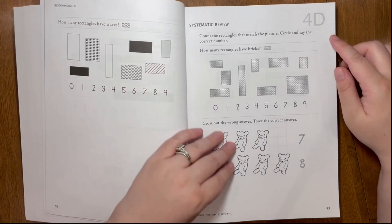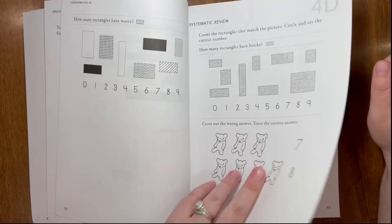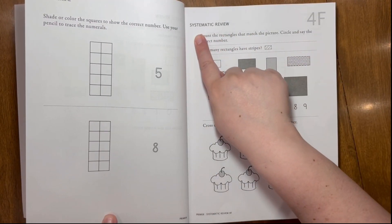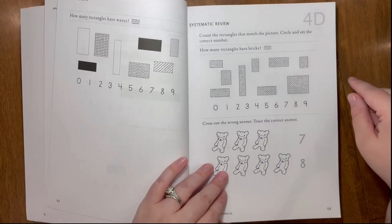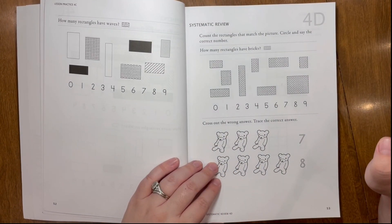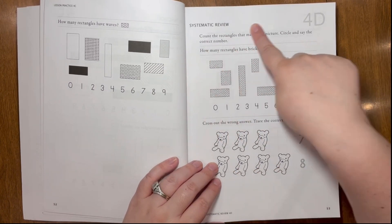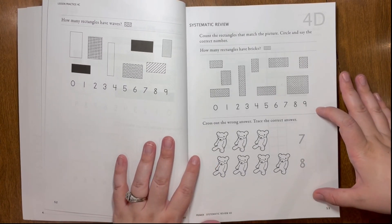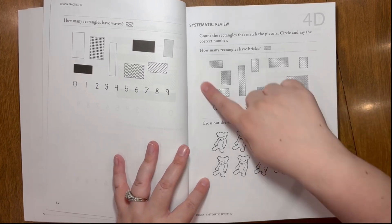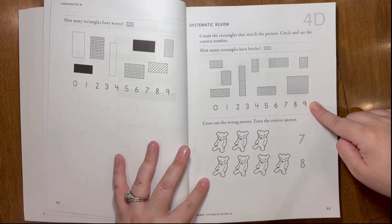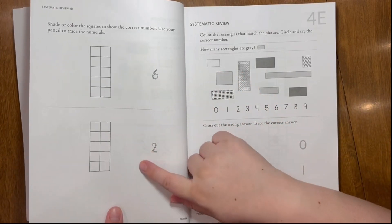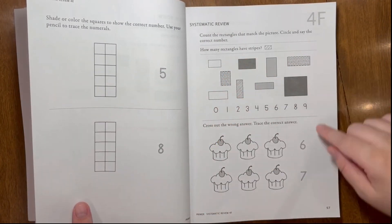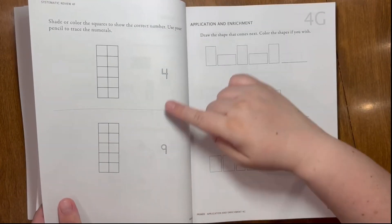Then, once you get to sheets D, E, and F, you're going to notice that it becomes systematic review. With the review, you're going to have a review of the same type of question, but it's also going to review the other types of questions that they've had in the previous lessons. So, this is exactly what they learned in lesson 4, but these types of questions come from lessons 1 through 3. So, you will see that we do have some differences now in the question types.